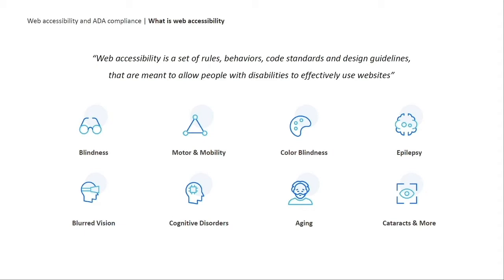The WCAG 2.1 is a massive 1,000-page guidebook that encapsulates a range of disabilities that go from hindering internet use to making internet use impossible without significant adjustments. The spectrum here actually comprises 20 to 25 percent of the general population, depending on whether we're going with the CDC or the World Health Organization.